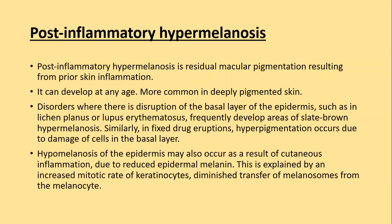Post-inflammatory hypermelanosis is a residual macular pigmentation resulting from prior skin inflammation. It can develop at any age but is more common in deeply pigmented skin. It involves disruption of the basal layer of the epidermis, as seen in lichen planus or lupus erythematosus, leading to slate-brown hypermelanosis. Most post-inflammatory hypermelanosis follows lichenoid or interface dermatitis.